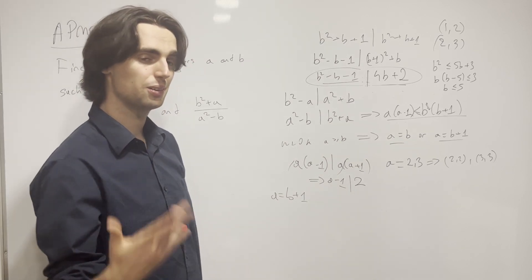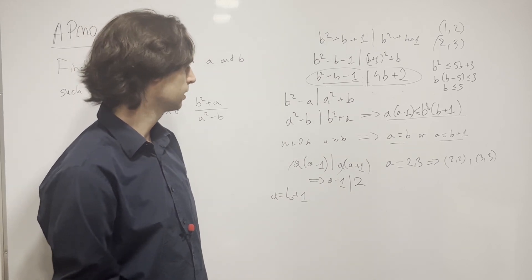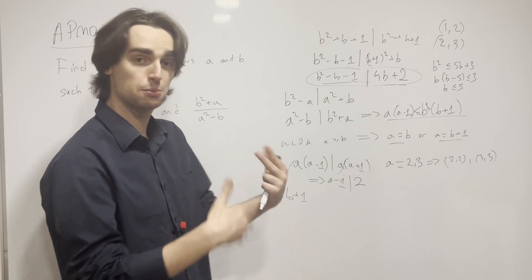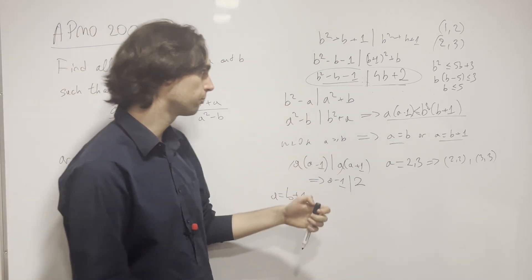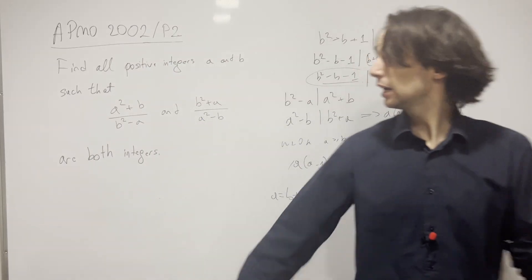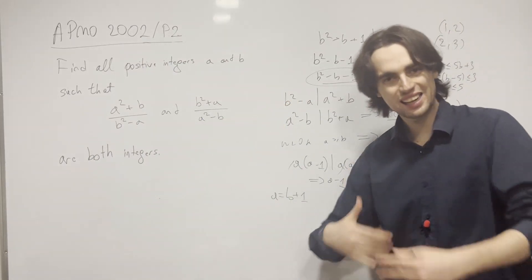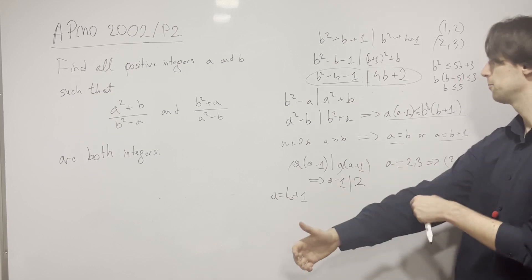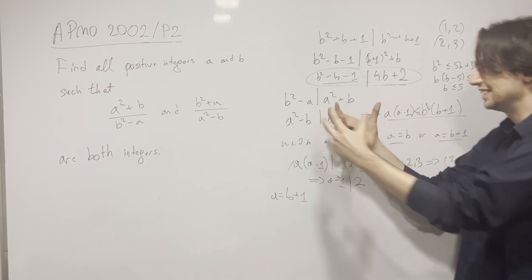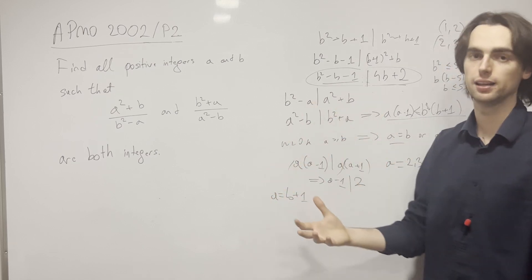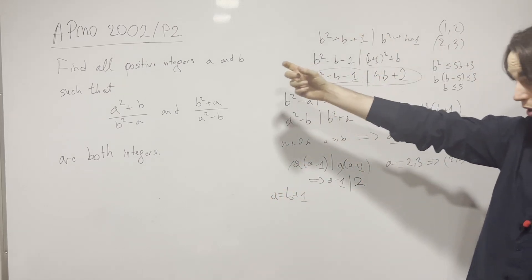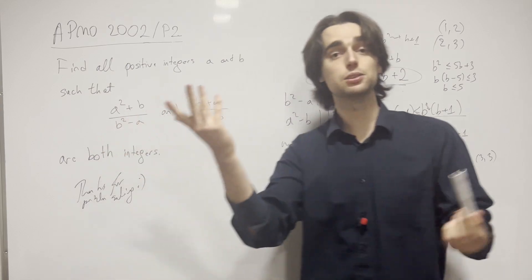And then we prove that and we are left with two cases: a equals b or a equals b + 1. And then the problem just finishes up from there into a couple of cases, which is totally doable. I think it helps build this technique of seeing size, comparing sizes between the divisor and the thing that's being divided. This finishes up our problem, and as always, thanks for problem solving.